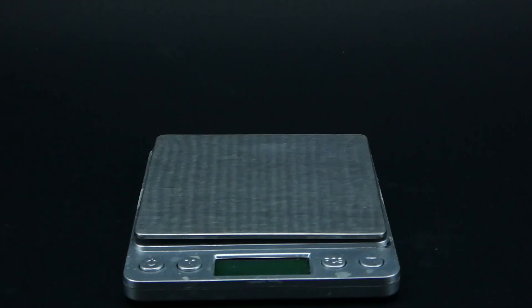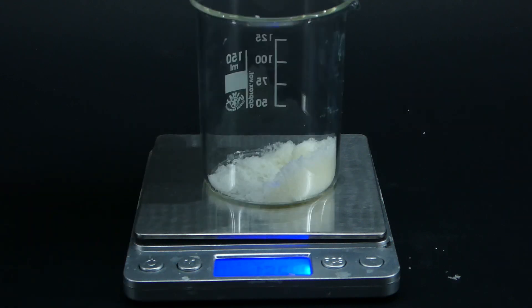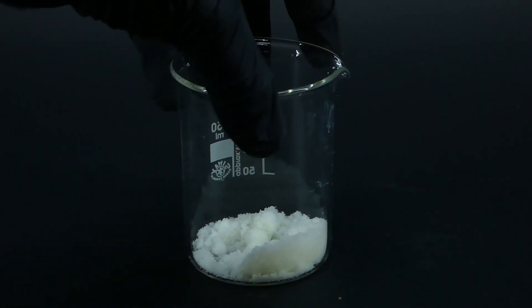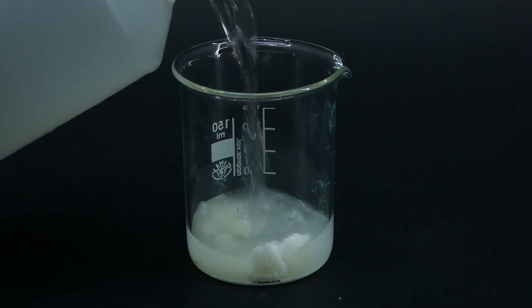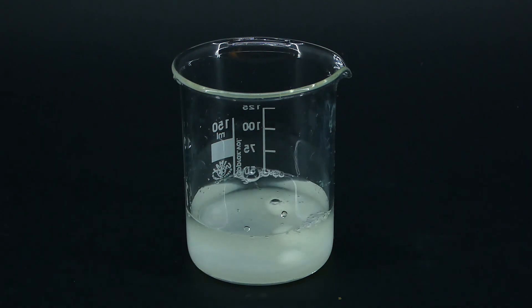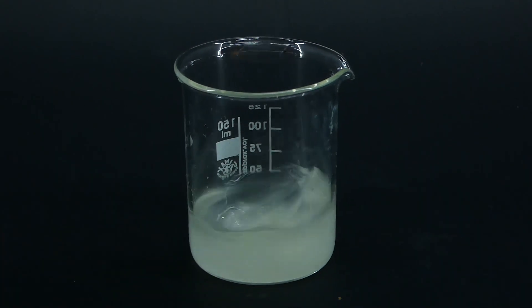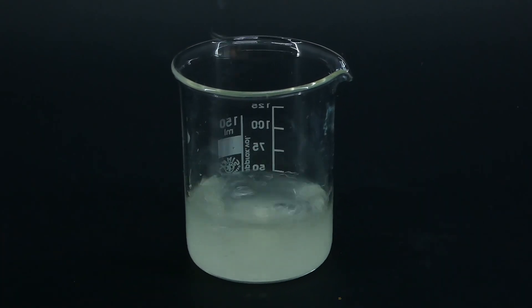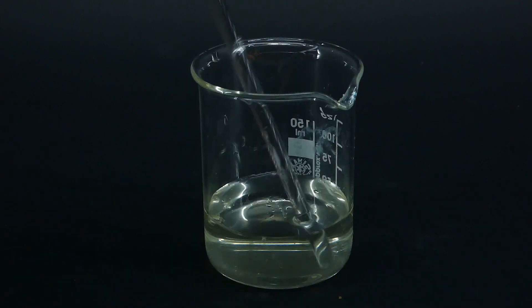The last thing that I need to make the isopropyl nitrite is a sodium nitrite solution. To make it, I dissolved 13.8g of sodium nitrite in about 50ml of distilled water. Sodium nitrite dissolves very easily in water, and it also cools the water down, because its dissolution is endothermic.